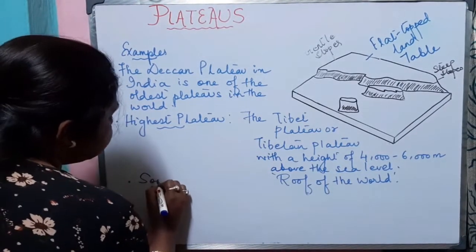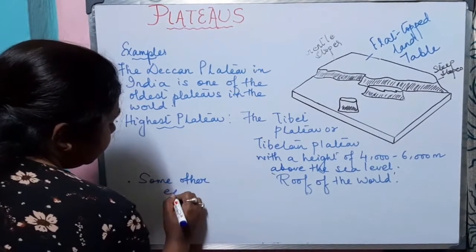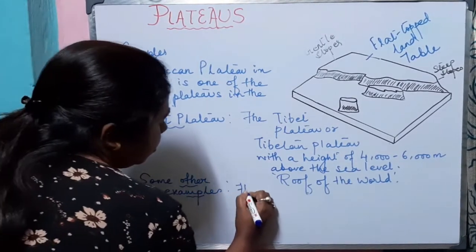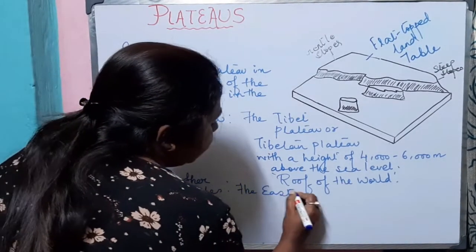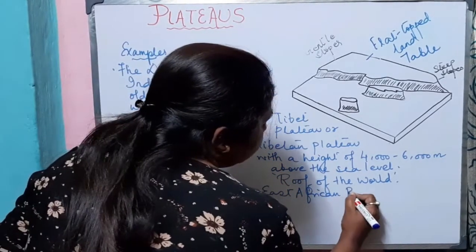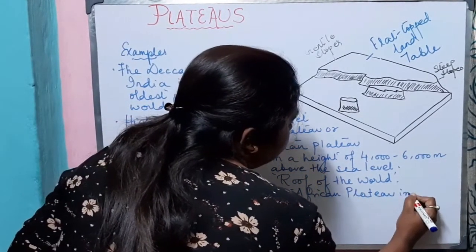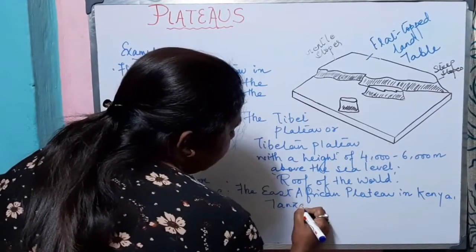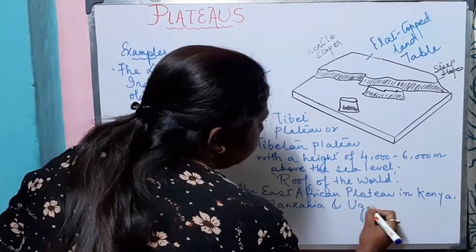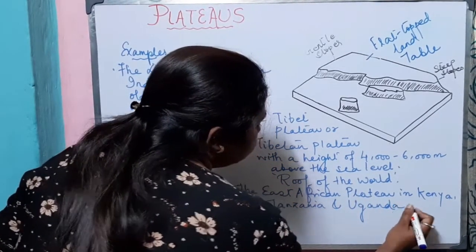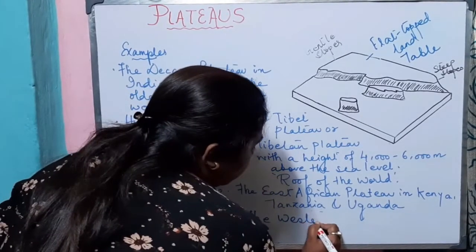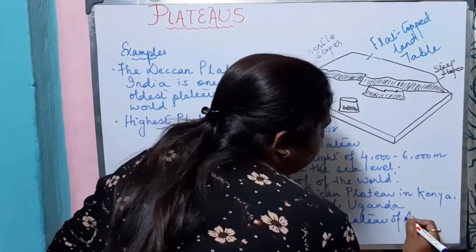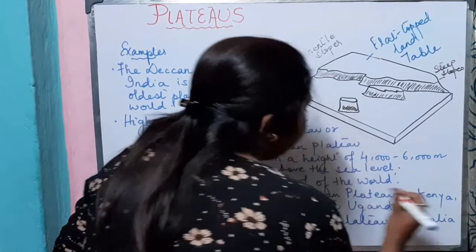Some other examples of plateaus are the East African plateau in Kenya, Tanzania and Uganda, and the Western plateau of Australia.